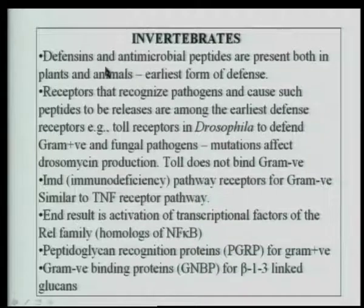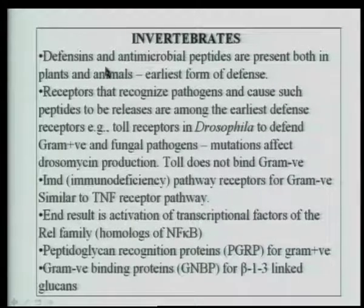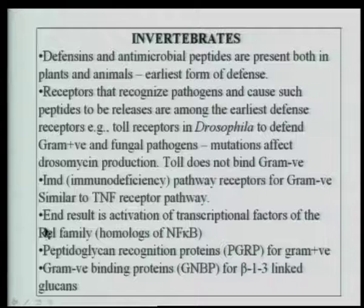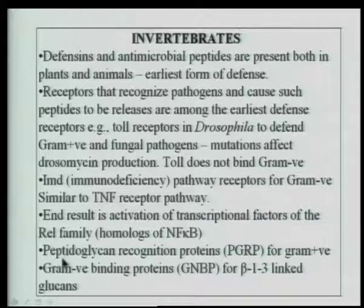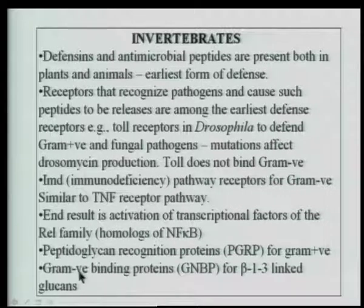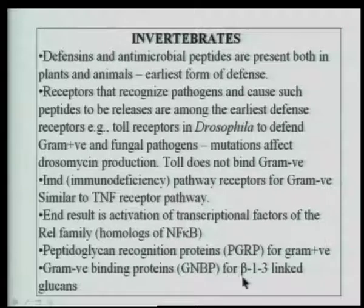In insects, a system homologous to the NF-κB pathway is also present in Drosophila — these belong to the REL family, as evidenced by homologous structures. There are also peptidoglycan recognition proteins, PGRP, in insects for recognition of gram-positive bacteria, and gram-negative bacterial binding proteins, GNBP, which bind to beta-1,3-linked glucans. Many pathogens whose structure contains these glucans and peptidoglycan have corresponding binding proteins.